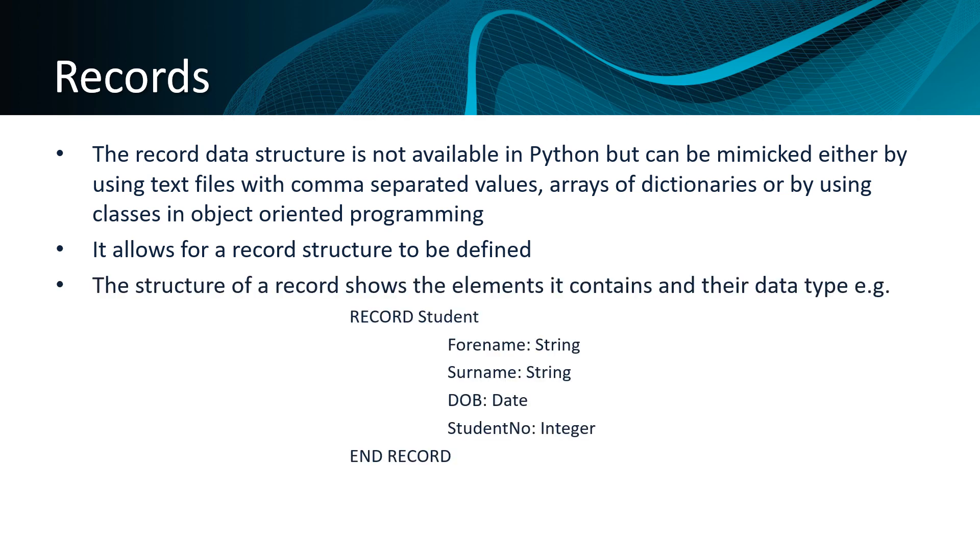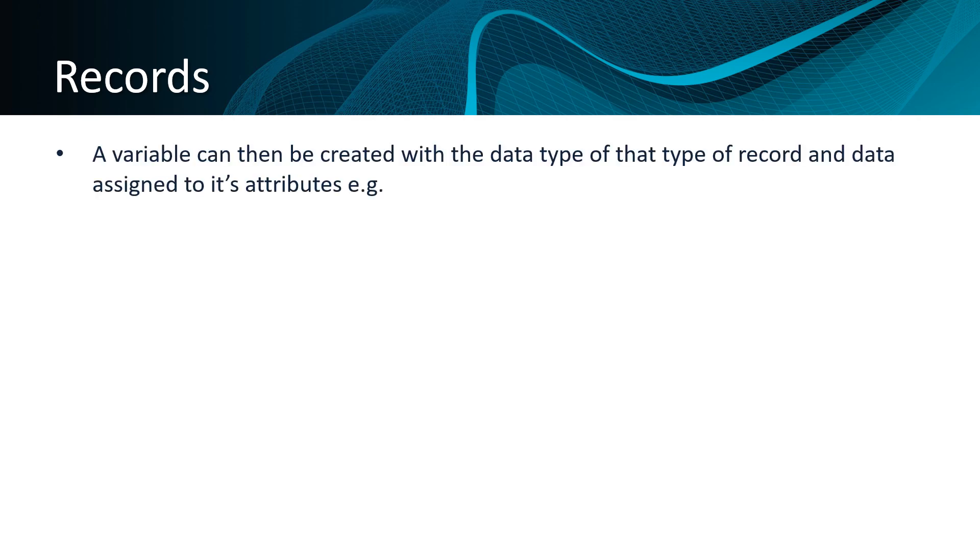This shows the elements that a record contains and their data type. So we could define a record such as student that would always be requesting a forename, surname, date of birth, and student number. Once a record structure has been defined, a variable can then be created with the data type of that type of record and data assigned to its attributes.